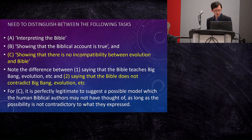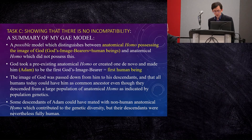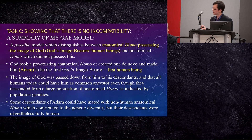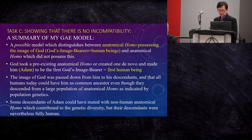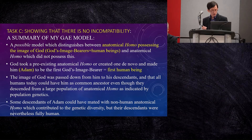For Task C, it is perfectly legitimate to suggest a possible model which the human biblical authors may not have thought of, as long as the possibility is not contradictory to what they expressed. I'm not going to say that the biblical authors actually talked about evolution — that's not true. I'm not claiming that my model is what the biblical authors said. Rather, I'm providing a possible model in accordance with Task C, which they may not have thought of, but which is not contrary to what they expressed.